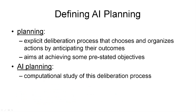Here is a definition for what we mean by artificial intelligence planning. Planning is an explicit deliberation process that chooses and organizes actions by anticipating their outcomes, and that aims at achieving some pre-stated objectives. What this says is planning is an explicit deliberation process. What this means is: to plan, we need to think. It's a mental process where we think about the actions we are trying to do. It also needs to be explicit thinking, which means it's conscious — not a subconscious process.